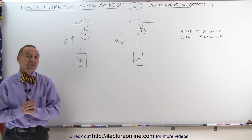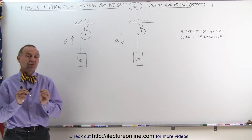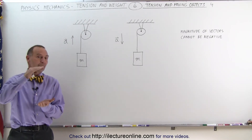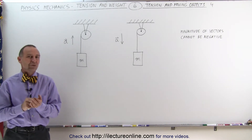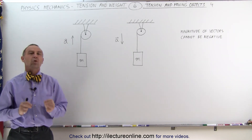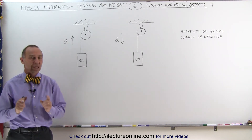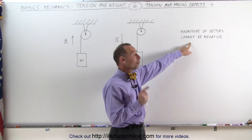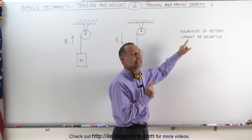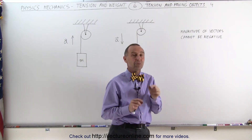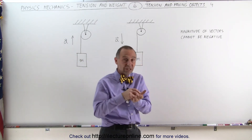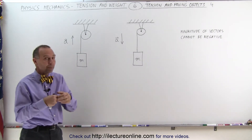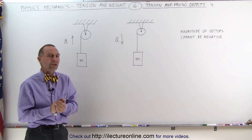Welcome to Electron Line. Now let's take a look at the tension of an object that's either accelerating upward or accelerating downward in terms of vector quantities. Remember, the magnitude of vectors cannot be negative, which means when you see a g for acceleration due to gravity, that g will be a positive quantity.